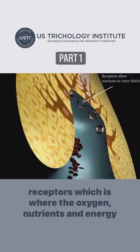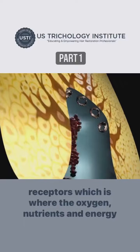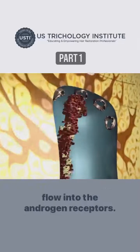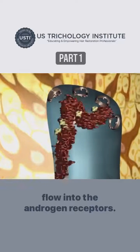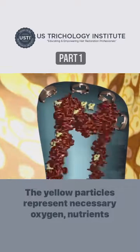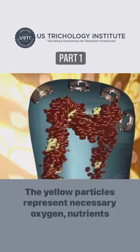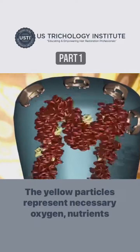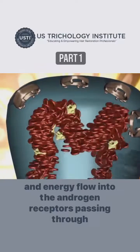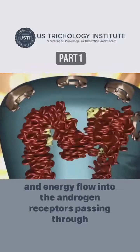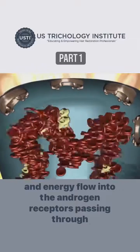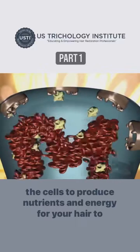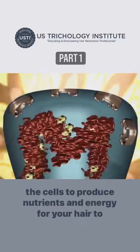This is where the oxygen, nutrients, and energy flow into the androgen receptors. The yellow particles represent necessary oxygen, nutrients, and energy, which flow into the androgen receptors, passing through the cells to produce nutrients and energy for your hair to grow.